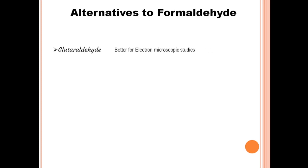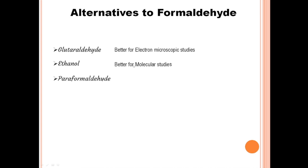Alternatives to formalin as a tissue fixative include glutaraldehyde, which offers advantages such as better preservation of ultrastructure in electron microscopy and reduced tissue shrinkage compared to formalin. Ethanol is another option, particularly for preserving tissues intended for molecular biology studies. Other alternatives include paraformaldehyde and zinc formalin, which may have specific applications depending on the desired tissue preservation characteristics. It is important to assess the specific requirements of the experiment to determine the most suitable alternative.